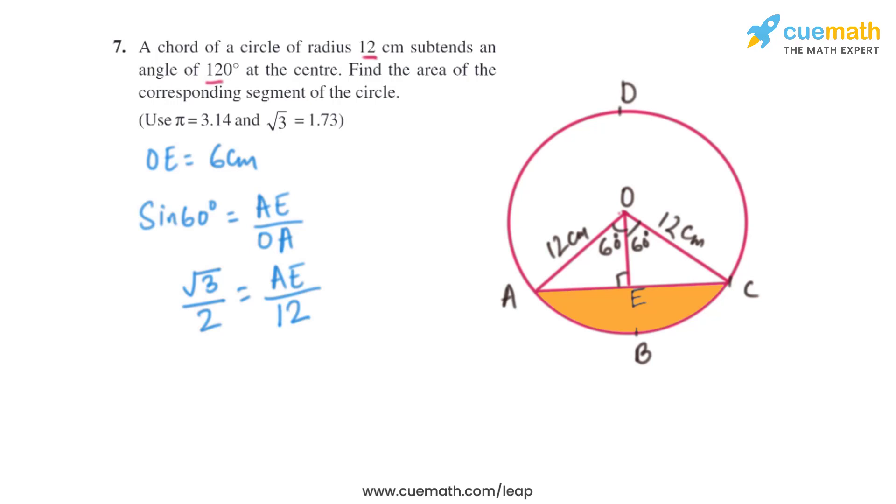From here we get the value of AE as 6 root 3 centimeters. To find the value of AC, it is just double of that, so 2 times 6 times root 3, which is 12 root 3 centimeters.